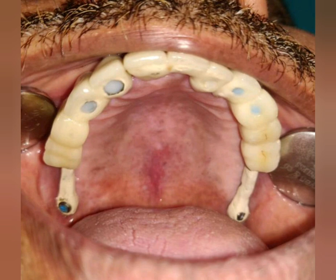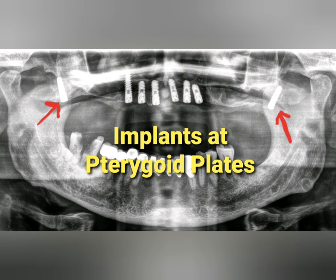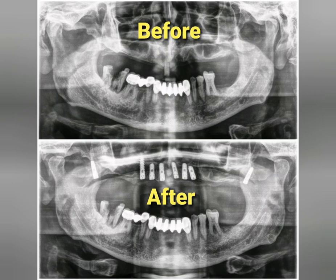We can see the extensions coming from the pterygoid implants to the final prosthesis. These extensions give extra anchorage to the prosthesis and also avoid cantilever formation. This is the occlusal view of the final result. This is the post-operative OPG, where we can see all eight implants in position — the red arrows indicate the implants at the pterygoid plates on the right and left sides. This before-and-after OPG comparison clearly demonstrates the outcome. Thank you.